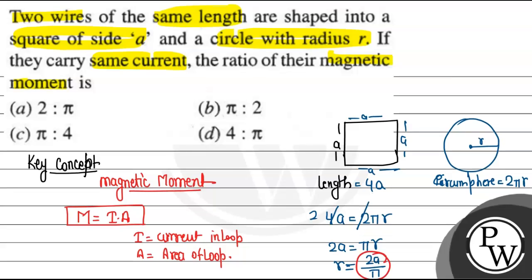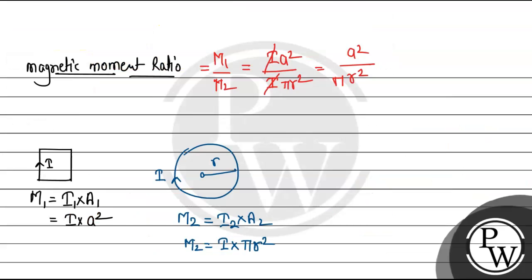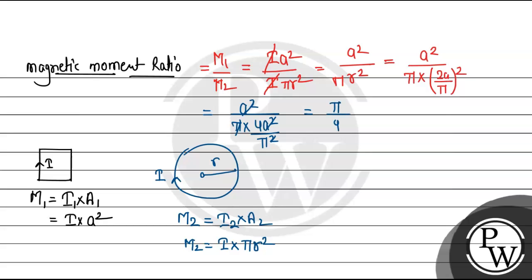So the ratio M1/M2 = (i·a²) / (i·πr²). The i cancels out, giving a²/(πr²). Now substituting r = 2a/π: a² divided by π times (2a/π)² = a² divided by π × (4a²/π²) = a² divided by (4a²/π). The a² cancels, leaving π/4. So the magnetic moment ratio M1/M2 = π/4.